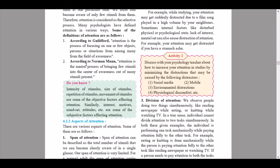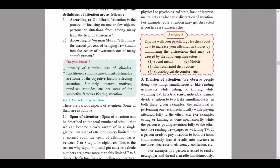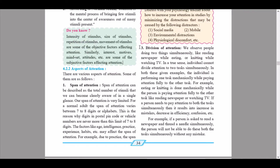In the 'Do You Know' box — this is important: intensity of stimulus, size of stimuli, repetition of stimulus, and movement of stimulus are some of the objective factors affecting attention. Similarly, interest, motive, mindset, and attitudes are some of the subjective factors affecting attention. Then we start with unit 4.2.2, aspects of attention.